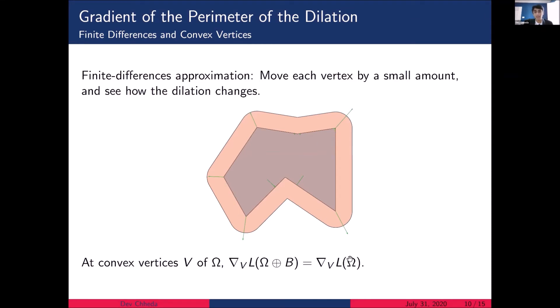So at the convex vertices, we have these outwards pointing gradient vectors. At the concave vertices, we have gradient vectors which are not at the vertex themselves, but still near them. In fact, for convex vertices of the shape, we're able to show that the gradient of the perimeter of the dilation is equal to the gradient of the perimeter of the shape itself, which is a known gradient and can be computed relatively easily.